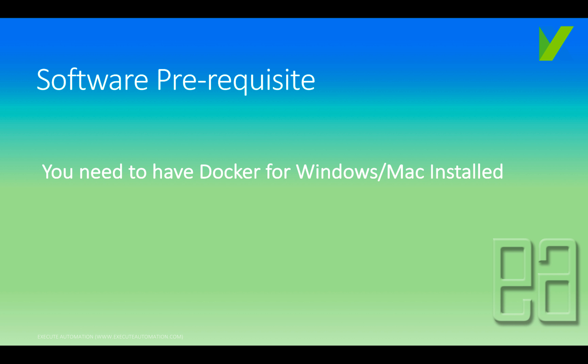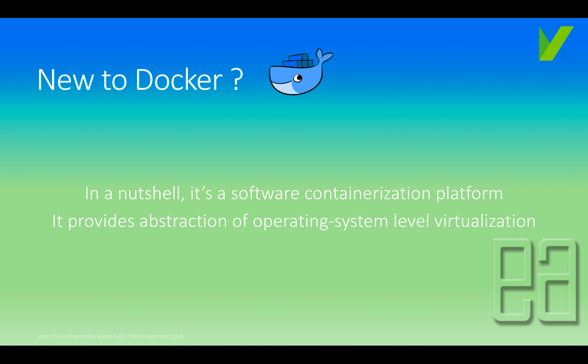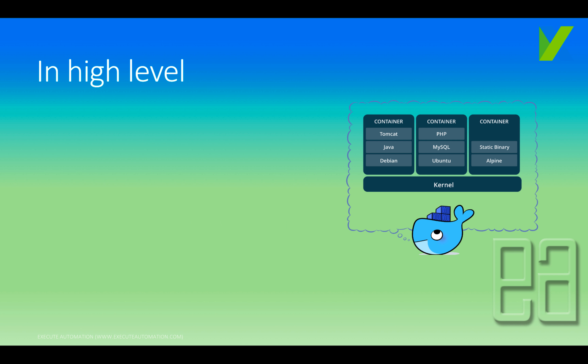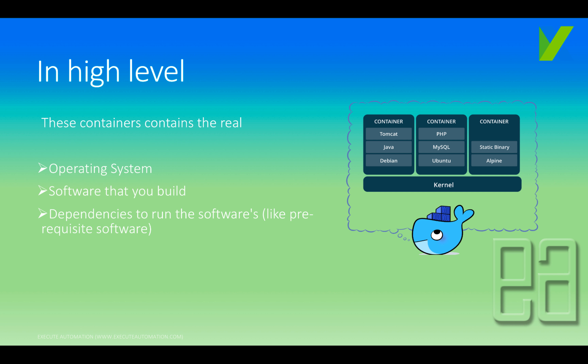The most important software prerequisite is you need to have Docker for Windows or Mac operating systems installed. If you're new to Docker, in a nutshell, it's a software containerization platform that provides an abstraction of operating system level virtualization. These containers contain the real operating system software that you build, dependencies, and environment variables to run that software.